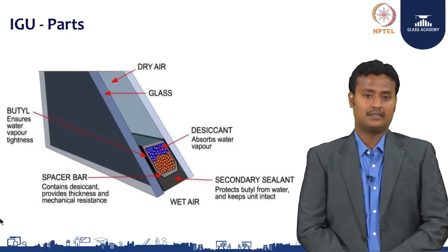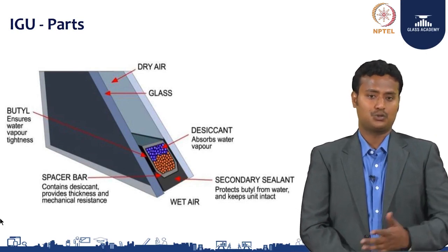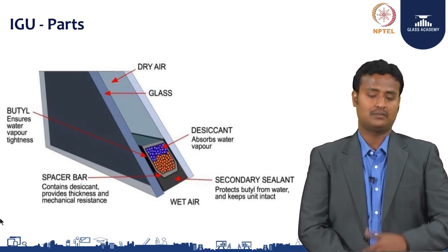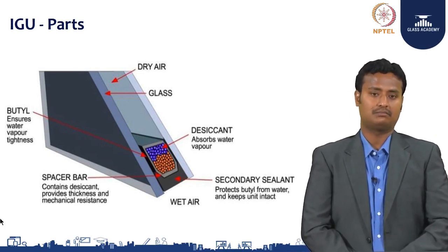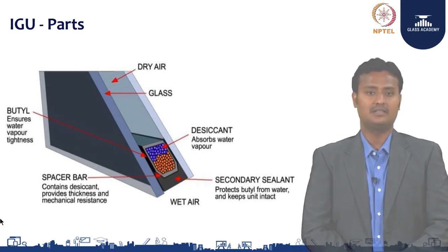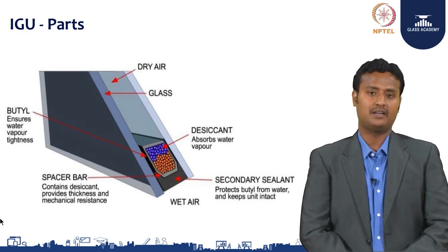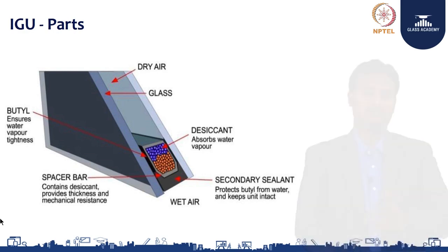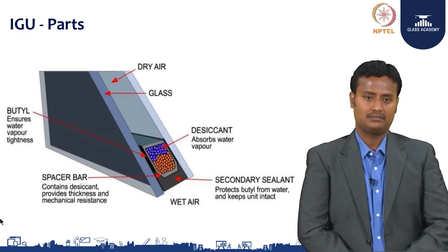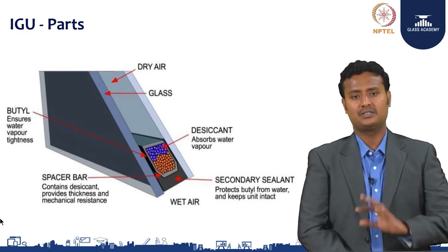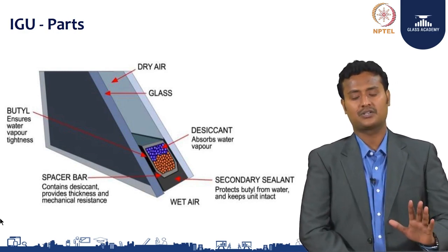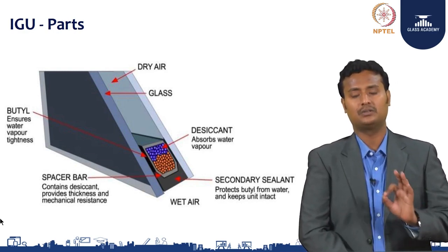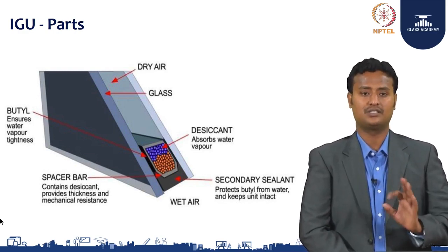There are two panes, or more panes, together hermetically sealed with primary and secondary silicone, separated by an aluminum channel. This is the typical construction of an IGU — an Insulated Glazing Unit.